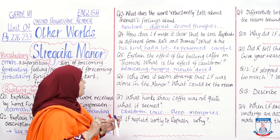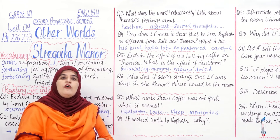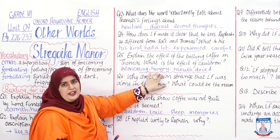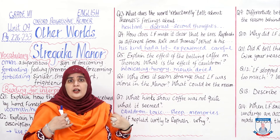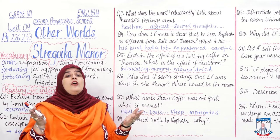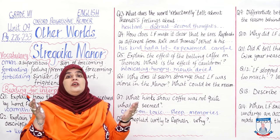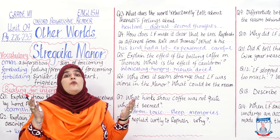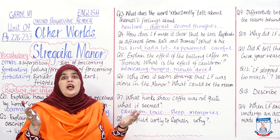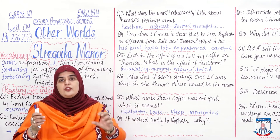Question: Explain the effect of the boiling coffee on Thomas. What is the effect of the word 'cauldron'? The boiling coffee made Thomas feel intoxicated. He felt hungry and his mouth dried with hunger. The effect of using the word 'cauldron' meant that Lord Fenister was up to no good — there was something sinister, something wretched, something wicked going on. It was a witch-like atmosphere created to basically entrap the three children.